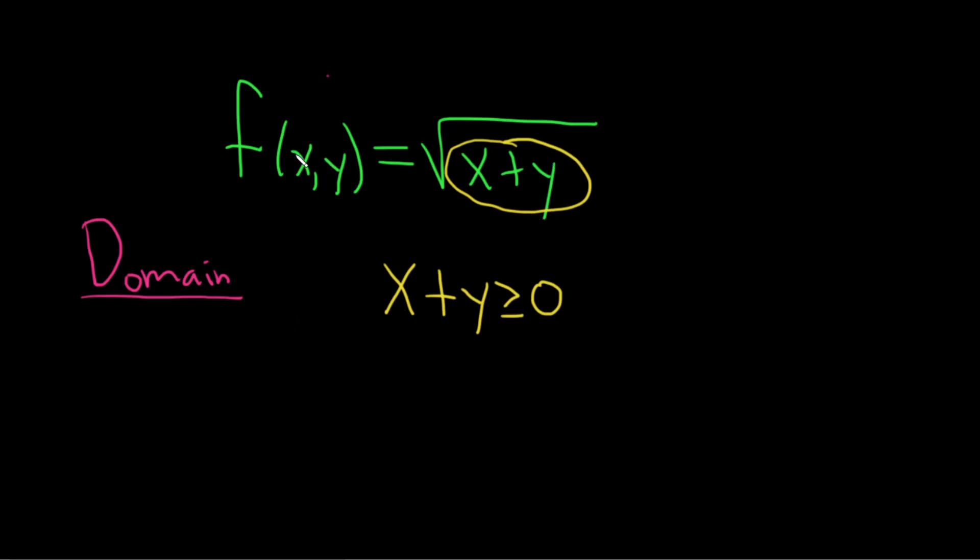So the domain is the set of all ordered pairs x, y for which this condition is satisfied. We can solve this for y by subtracting x from both sides like this. So we have y is greater than or equal to minus x.